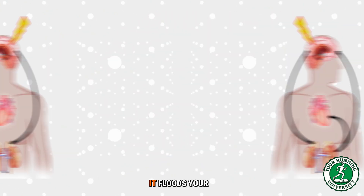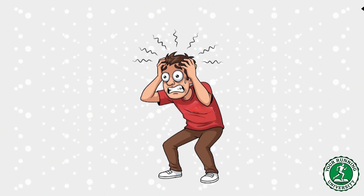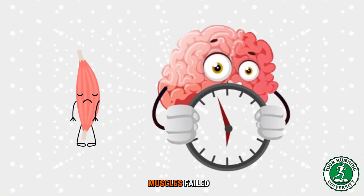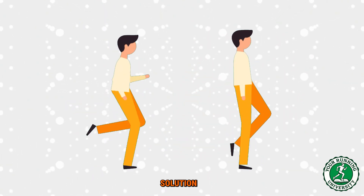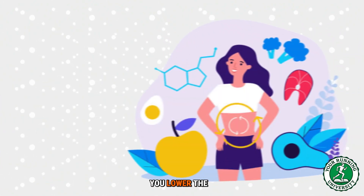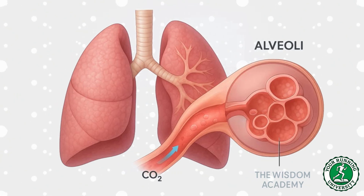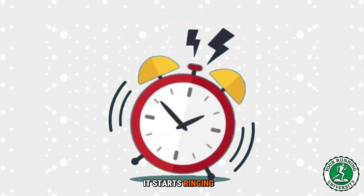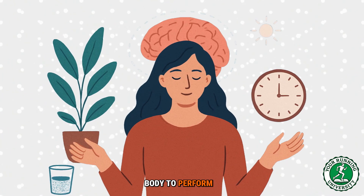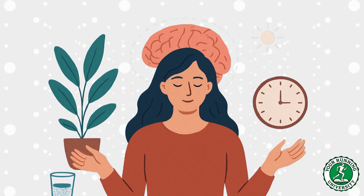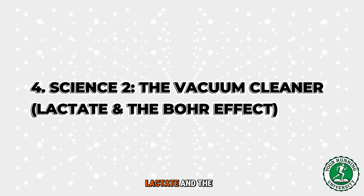The brain forces you to hyperventilate, floods your system with stress hormones, and screams: stop running or we die. That is why you stop — not because your muscles failed, but because your brain's alarm system shut you down. The walk-run solution: when you insert a one-minute walk interval, you lower the metabolic output just enough. You allow your lungs to offload that excess CO2, turning off the alarm before it starts ringing. By keeping the chemoreceptors calm, you keep the brain calm — and a calm brain allows the body to perform for 30, 40, or even 60 minutes.